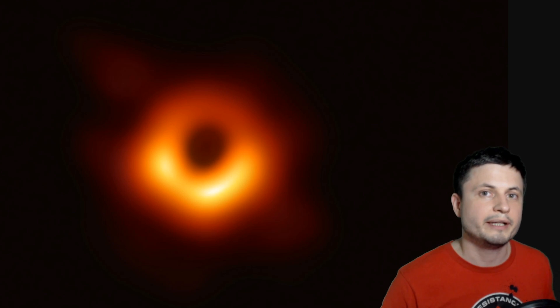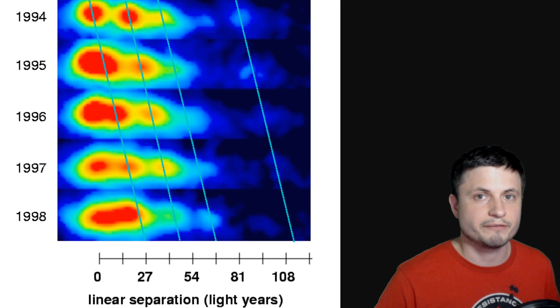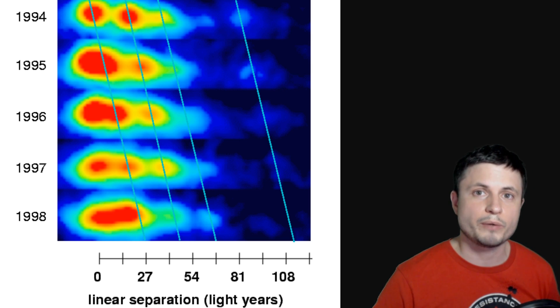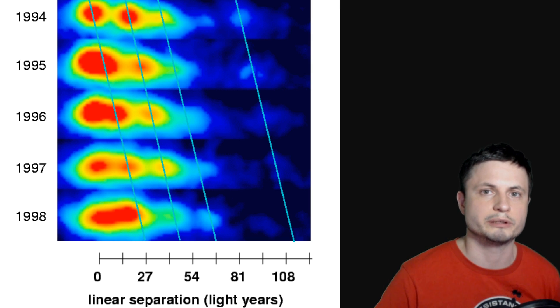In 2019, this black hole became really famous because we were able to take a photo of it, but it was famous for a lot of other things even before this picture came out. Over the past 20 years, the scientists have established that this black hole is really good at creating these superluminal jets. Now, this is a typical emission that was observed in 1994, 95, 96, up to 98.